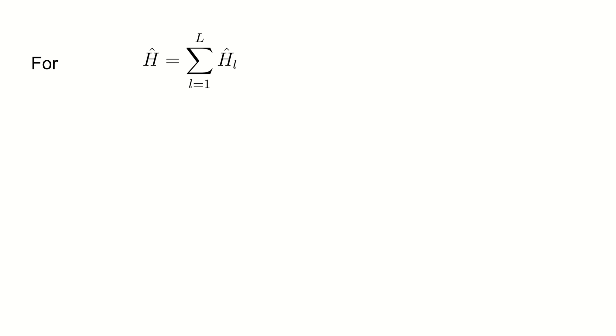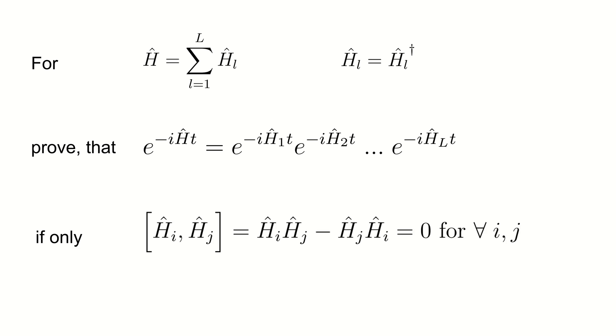For any local Hamiltonian which consists of L Hermitian terms, we are going to prove that the evolution under this Hamiltonian can be decomposed into the product of the evolution of local terms if only all terms commute with each other.